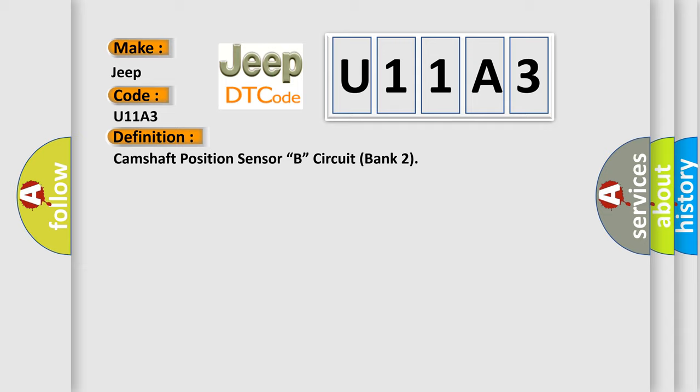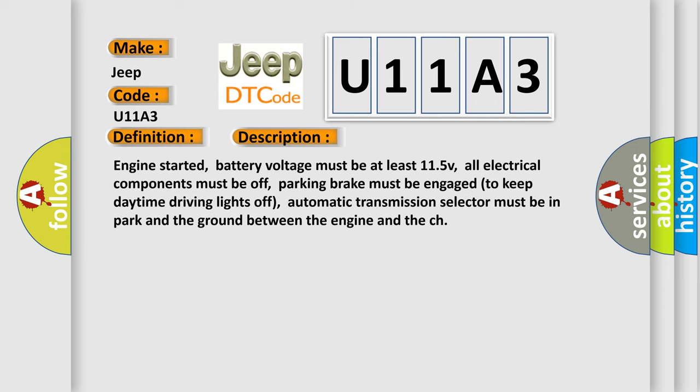And now this is a short description of this DTC code. Engine started, battery voltage must be at least 11.5V, all electrical components must be off, parking brake must be engaged to keep daytime driving lights off, automatic transmission selector must be in park and the ground between the engine and the chassis.